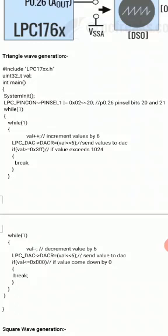To configure P0.26 as DAC output, bits 20 and 21 of PINSEL1 are used. If bits 20 and 21 are 0,0 it works as GPIO. If 0,1 it is another function. If 1,0 it is DAC output. So we have to make bit 21 = 1 and bit 20 = 0 to make P0.26 work as a DAC output.